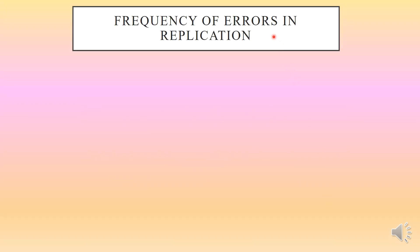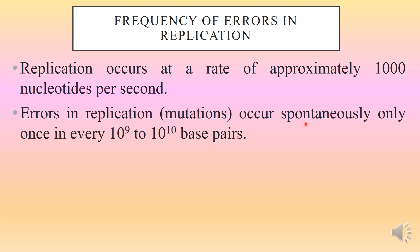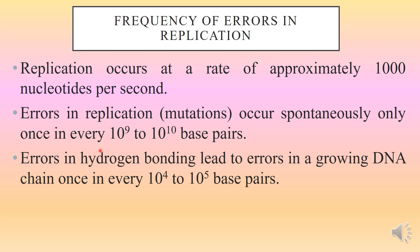Regarding the frequency of errors in replication: replication occurs at a rate of approximately 1,000 nucleotides per second. Errors occur spontaneously only once in every 10⁹ to 10¹⁰ base pairs, which means the process of replication has a very high fidelity rate.